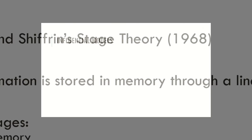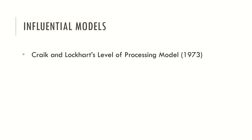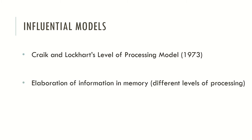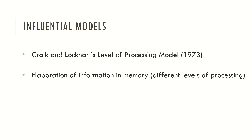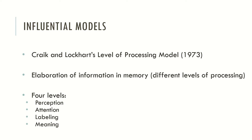Another model is Craik and Lockhart's levels of processing model, which is also very important in this paradigm. They stated that the elaboration of information in memory may take different levels, from the surface level to a deeper level. The first level involves perception, below that attention, then labeling information, and then meaning attribution. When we start to attribute meaning to information or events, we are reaching a deeper level of information processing.